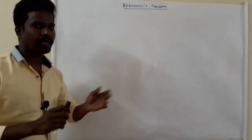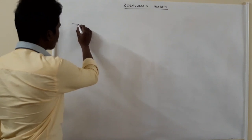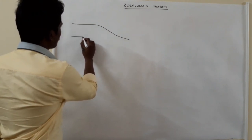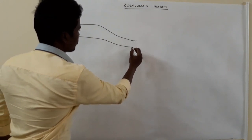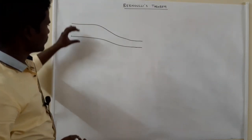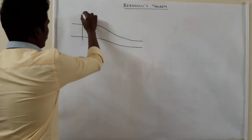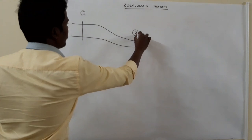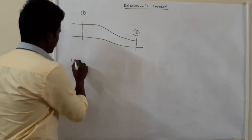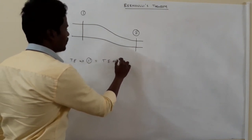Now, if you look at Bernoulli's theorem, it is the proof. In the pipeline, you know the cross-sectional area formula. So in the case, this is point 1 and this is point 2. According to Bernoulli's theorem, total energy at point 1 is equal to total energy at point 2.